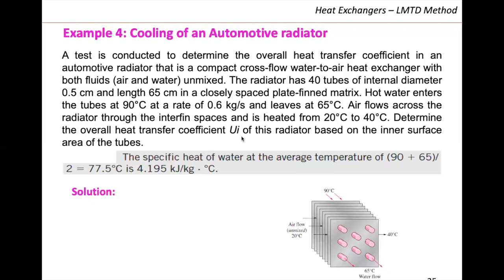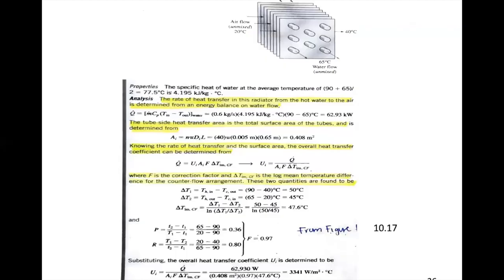Determine the overall heat transfer coefficient U_i based on the inner surface area of the tubes. We know it's based on the inner area because of the subscript i. If it were U_o, that would mean based on the outer surface area. This is a cross-flow heat exchanger, so the LMTD method will require a correction factor, which we need to read from a figure — specifically figure 10-17 for cross-flow with both fluids unmixed.